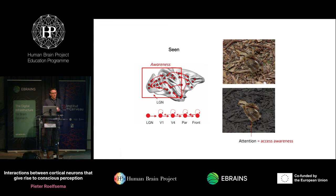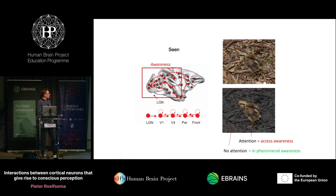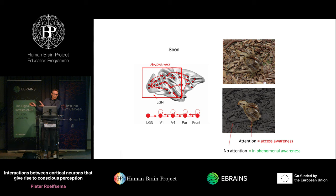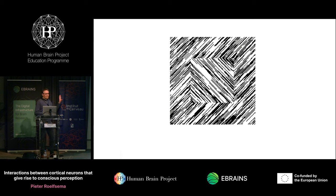Access awareness is the thing you direct attention to, for which you bind all features into a coherent percept. There's another form — phenomenal awareness — that not everyone agrees on: the stuff you see but don't direct attention to. My provisional definition is all the stuff you could attend to if you wanted to but aren't. If you switch attention to the stick, that enters access awareness and the bird goes into phenomenal awareness. I'll now present data in accordance with this view, based on work with colleague Victor Lamme.